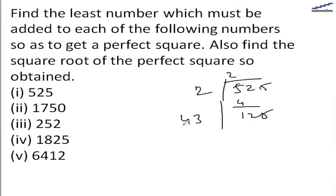For 525, 43 multiplied by 3 is 129. So that means we need to add 4 to 525 and then it will become 529 and the square root will be 23.